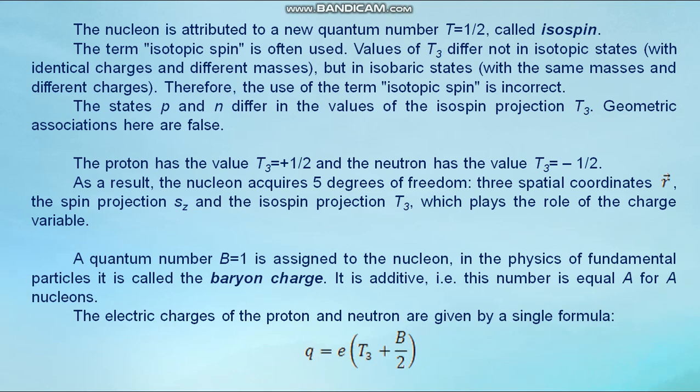A quantum number B equals one is assigned to the nucleon in the physics of fundamental particles. It is called the baryon charge. It is additive, i.e., this number is equal A for A nucleons. The electric charge of the proton and neutron are given by the single formula: q equals e multiplied (T₃ plus B/2).